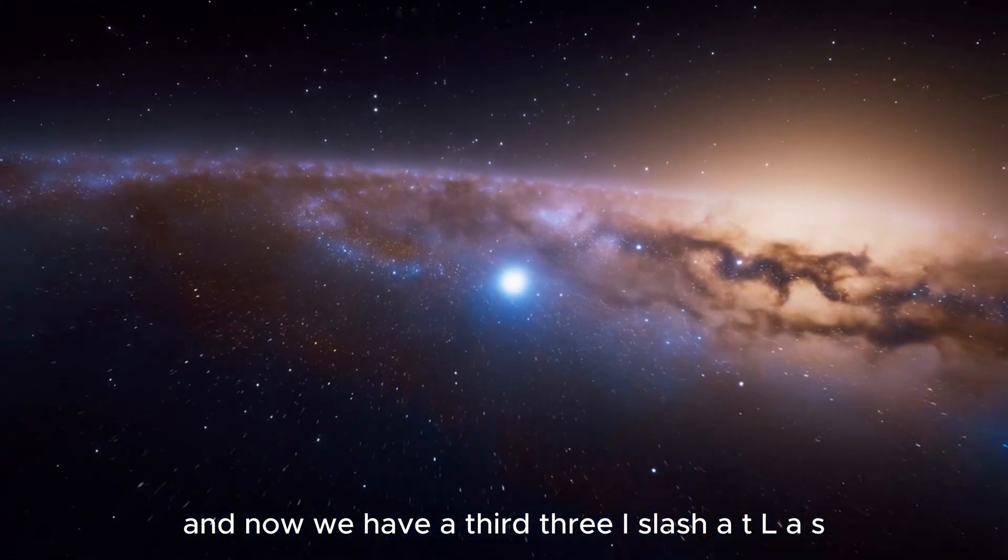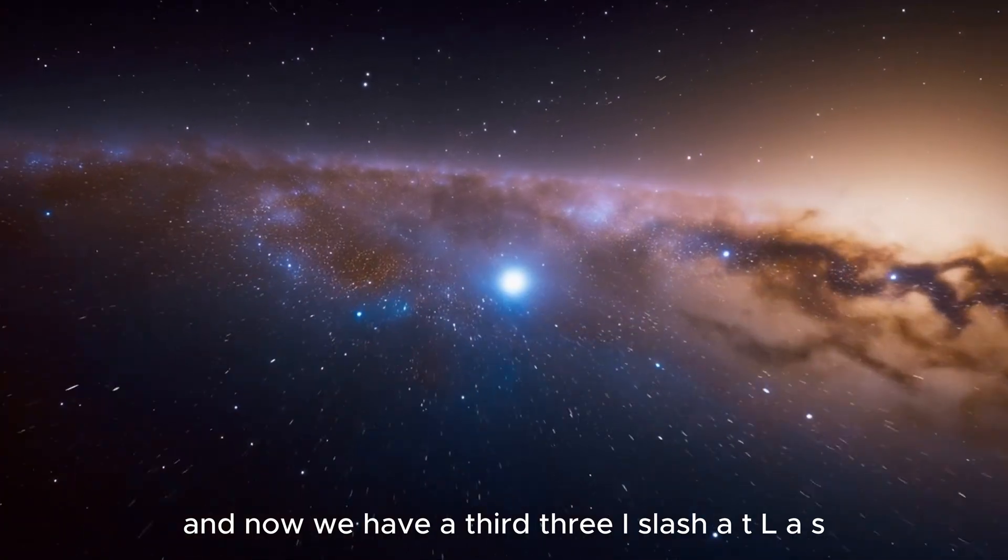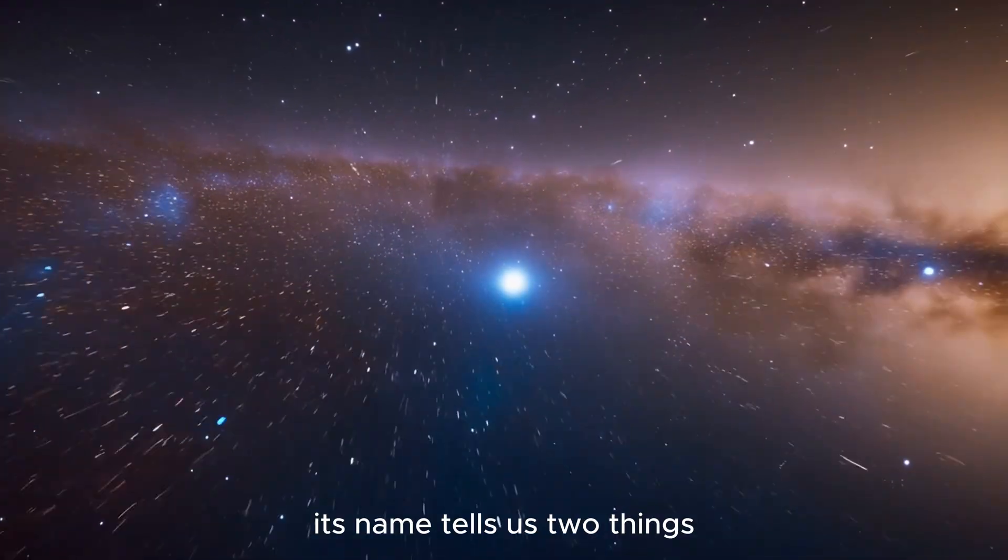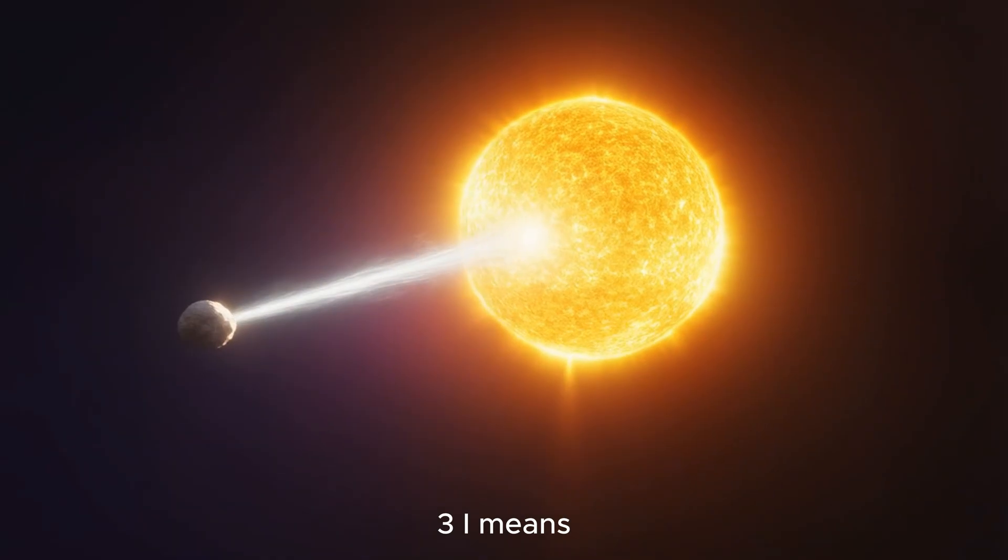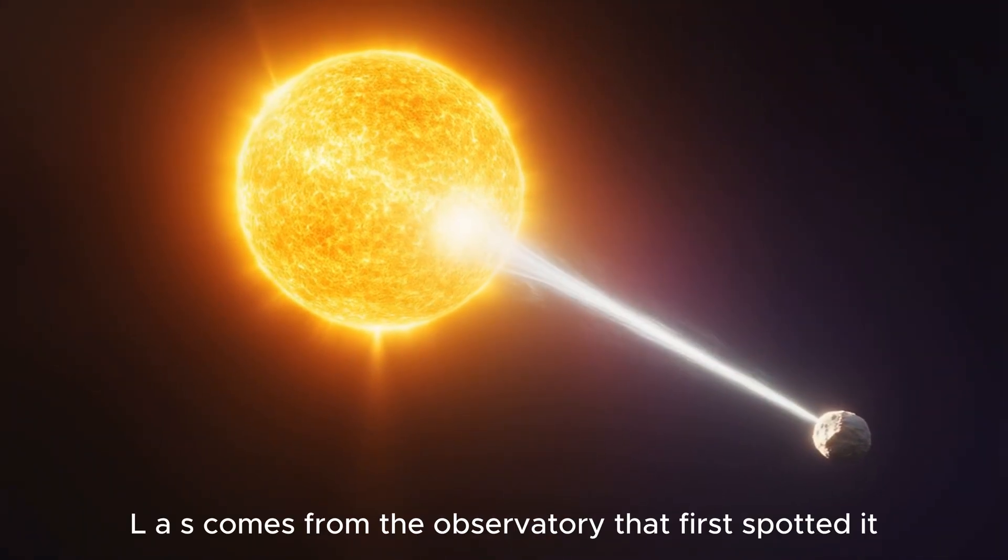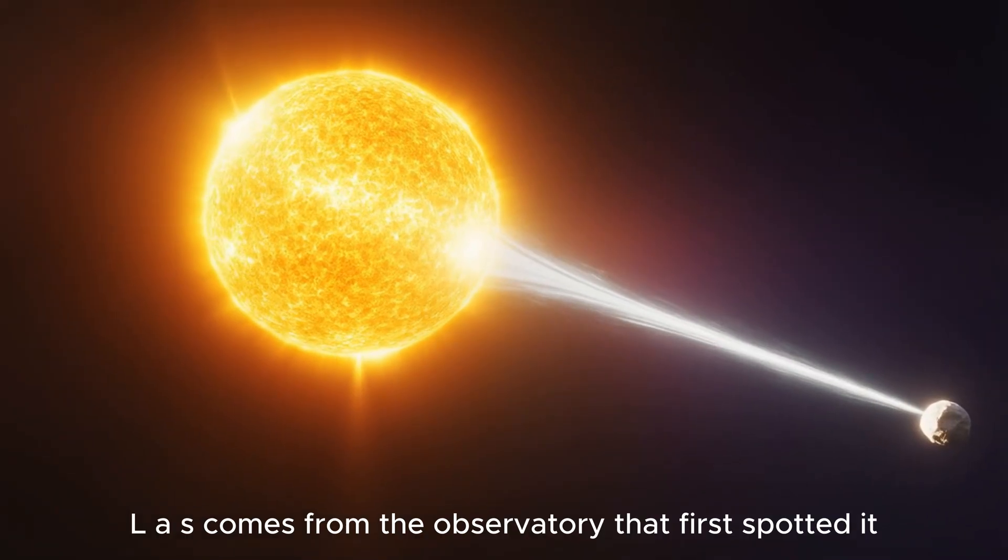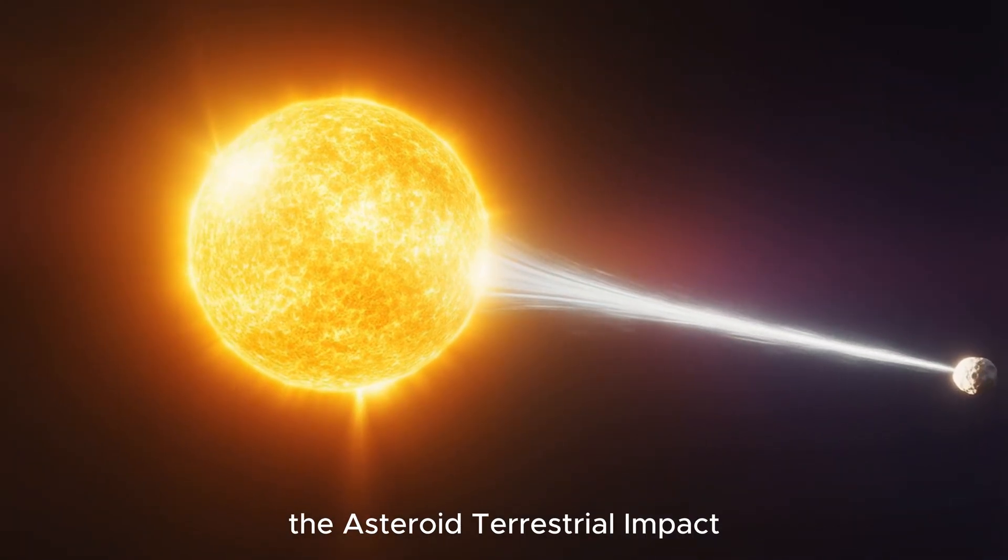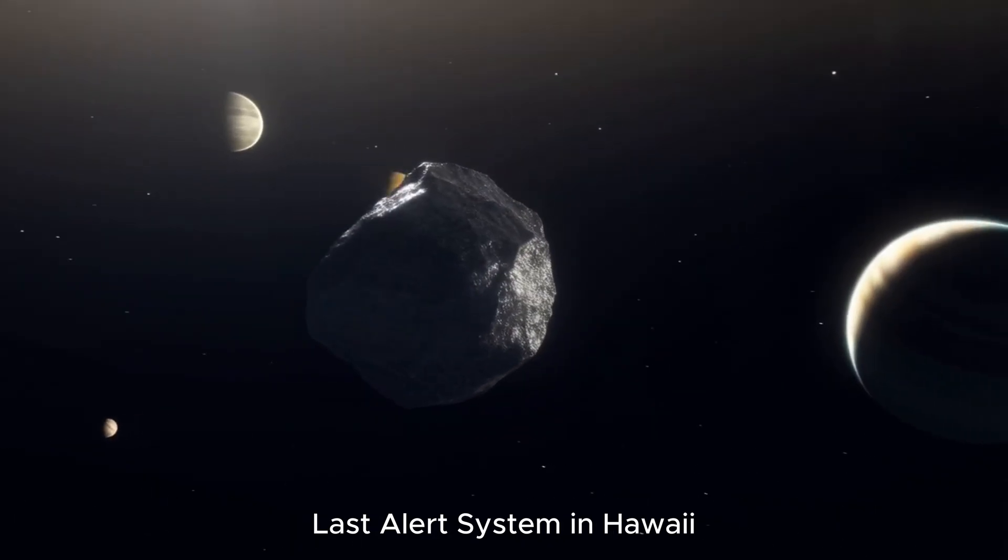3i/ATLAS. Its name tells us two things. 3i means it's the third interstellar object ever discovered, and ATLAS comes from the observatory that first spotted it, the Asteroid Terrestrial Impact Last Alert System in Hawaii.